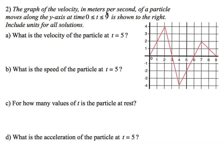The graph of the velocity in meters per second of a particle moving along the y-axis from 0 to 9 is shown at right. So this is a velocity graph. The y-axis is in meters per second, and the x-axis is in seconds. It's a velocity graph, and it goes from 0 to 9 as you can see in the picture.